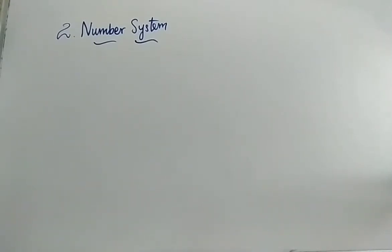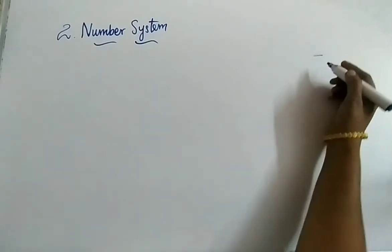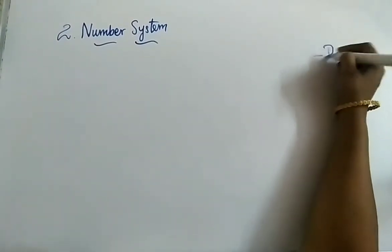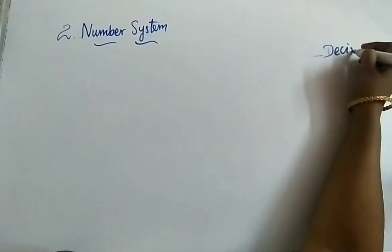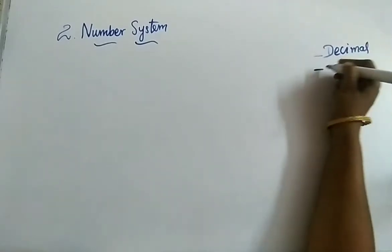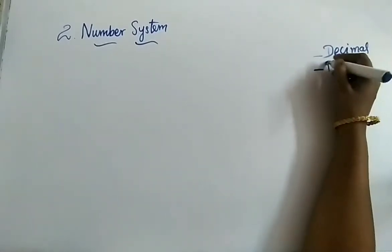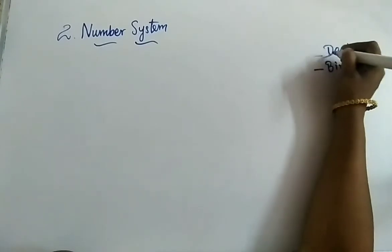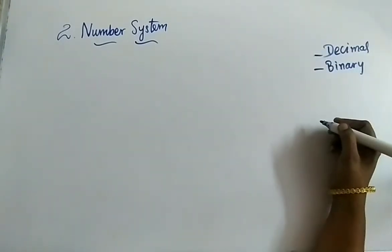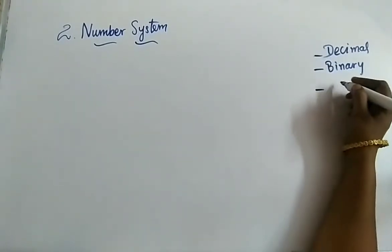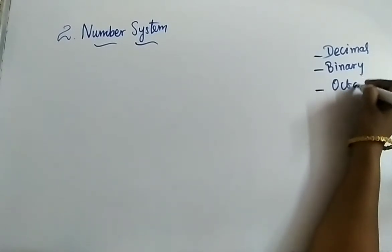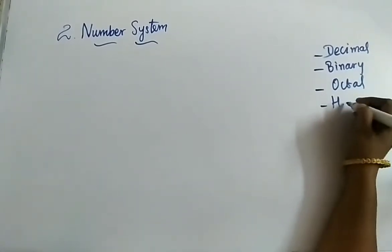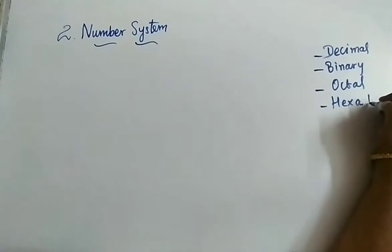How many types of number systems are there? Totally you have four types. The first one is decimal, the second one is binary, the third one is octal, and the fourth one is hexadecimal.